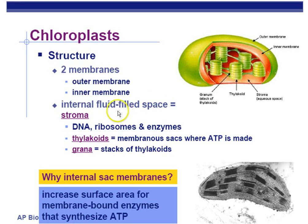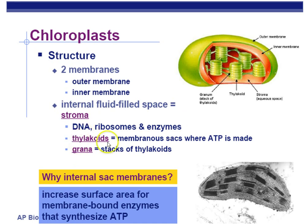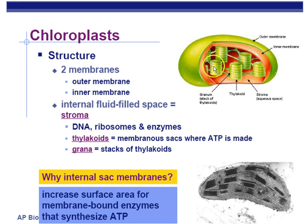There's an internal fluid-filled space called the stroma — the liquid interior of the chloroplast — and that's where the DNA, ribosomes, and enzymes are. They have little membrane sacs that look like little pancakes, all called thylakoids. That's where the light reactions are going to take place, making ATP and something called NADPH. A stack of thylakoids is called a grana — it's like a stack of pancakes.